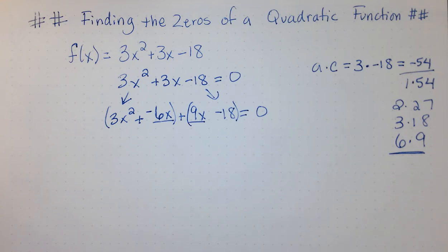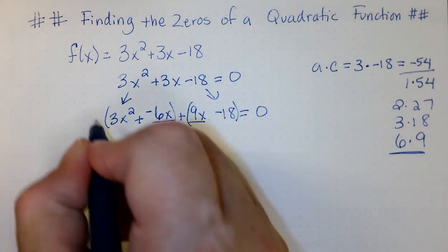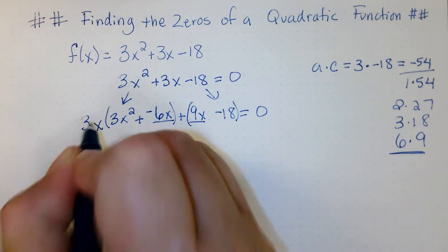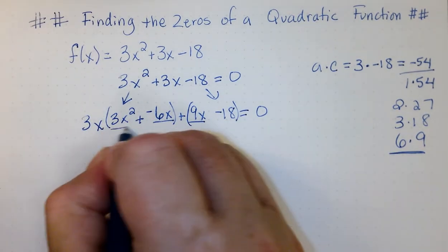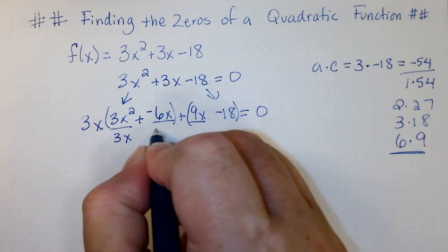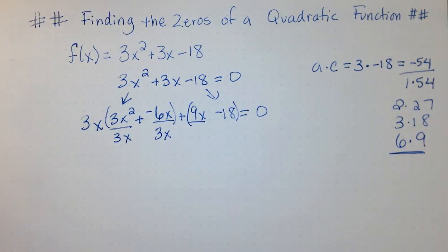The next step is to factor out the greatest common factor in each group. The greatest common factor in the first group would be 3x. If I place the 3x out in front of that factor, then I also have to divide each of these terms inside that by 3x as well. This is how we make this mathematically correct. So, we're really not changing anything mathematically. This is still equivalent.